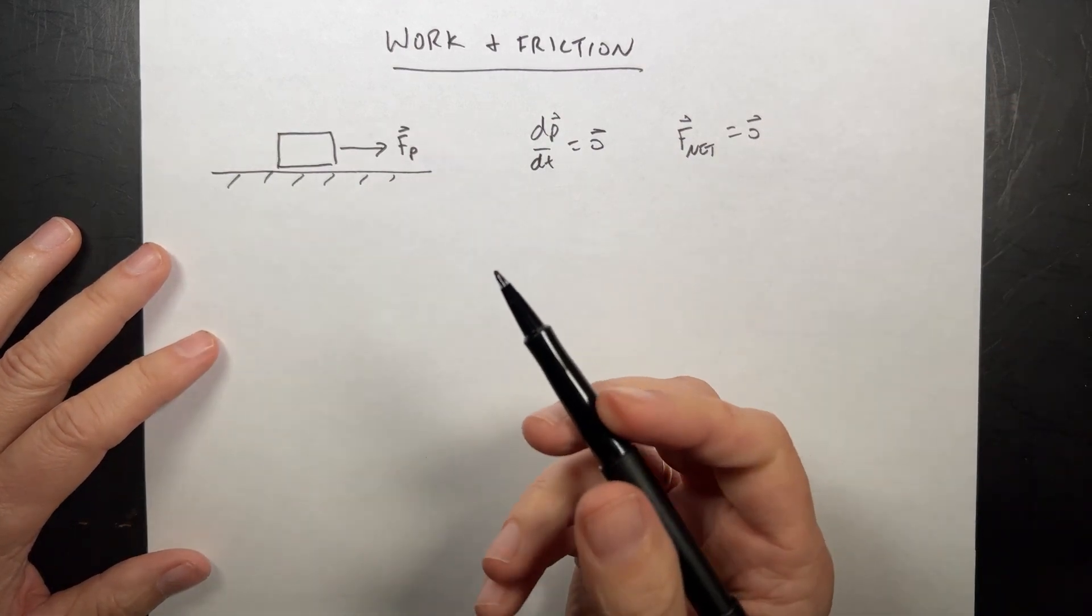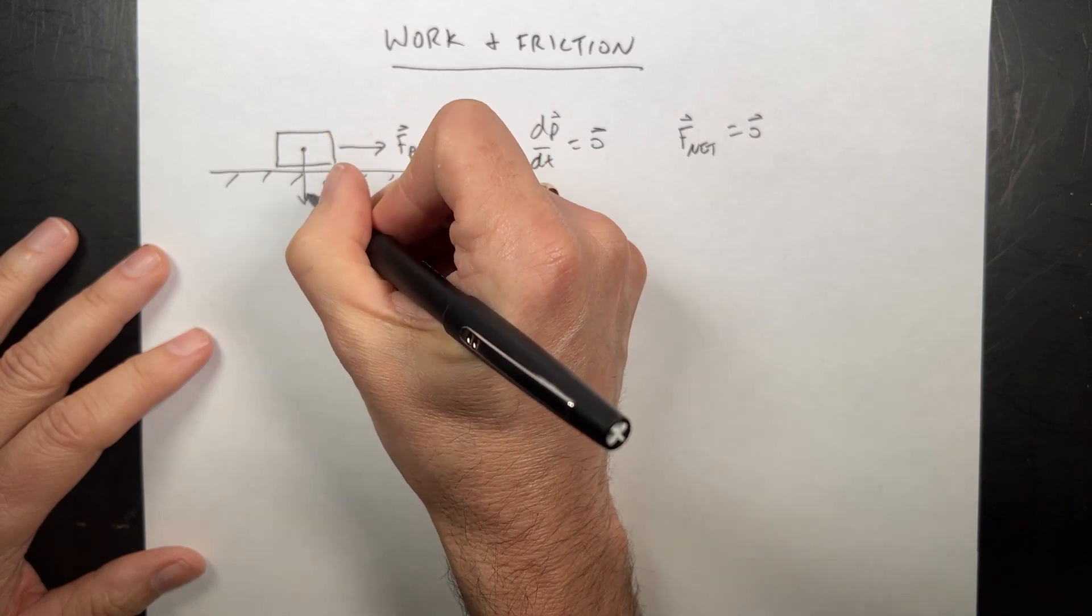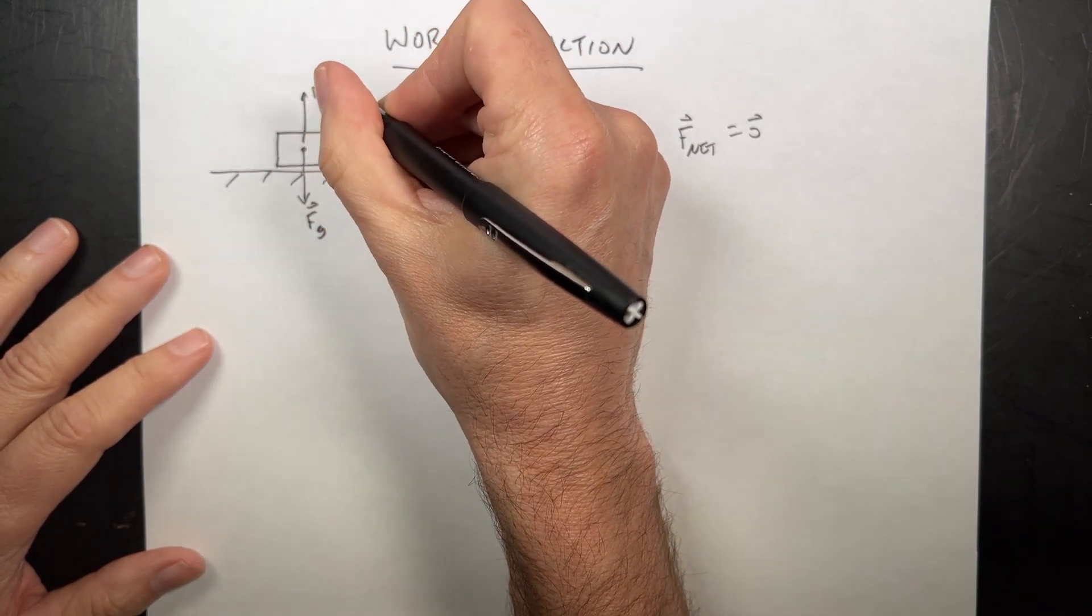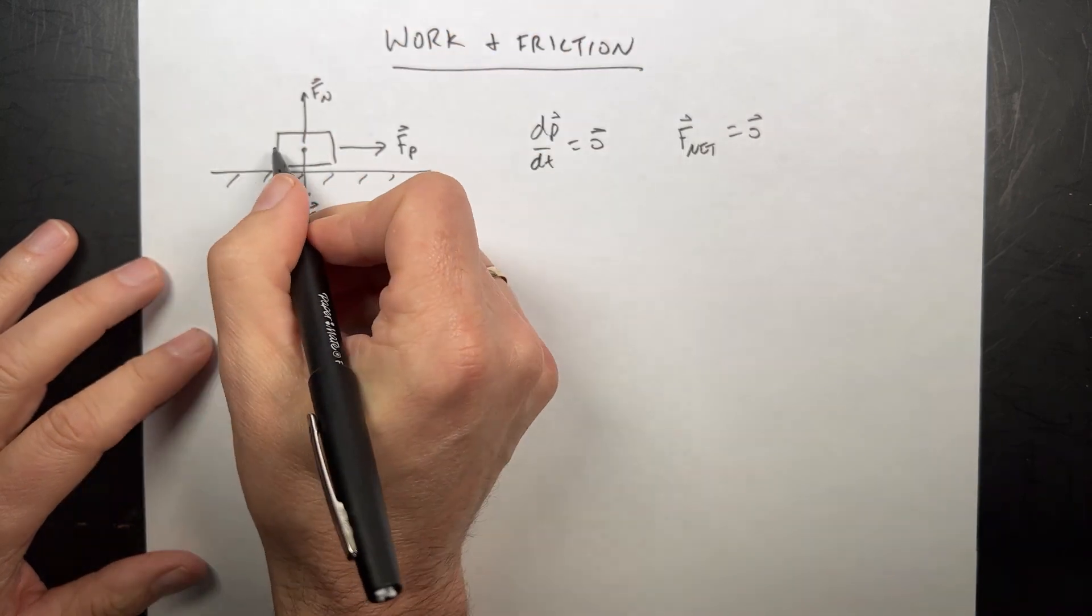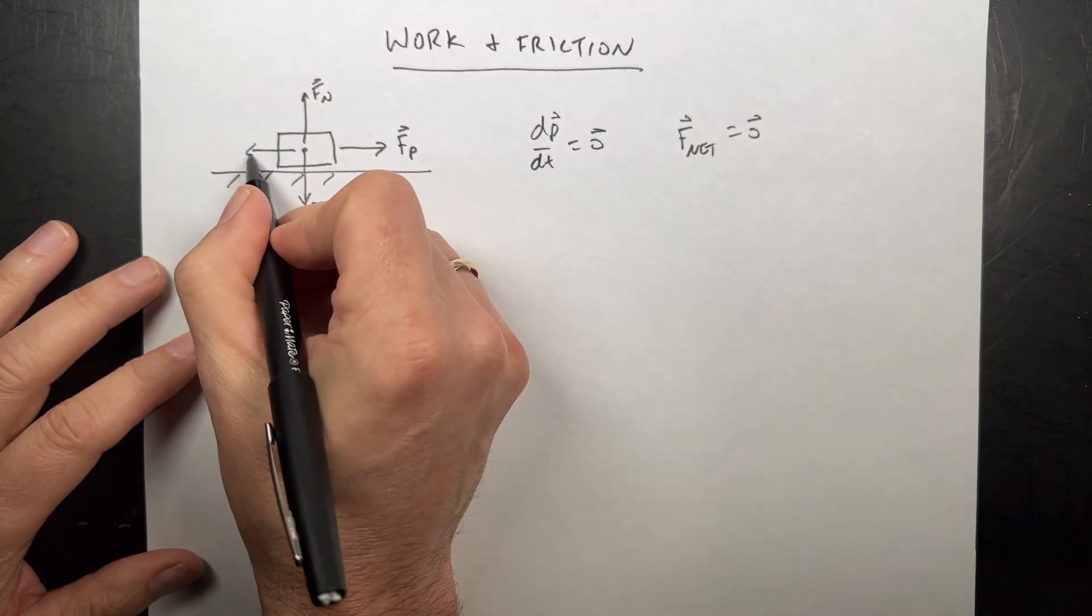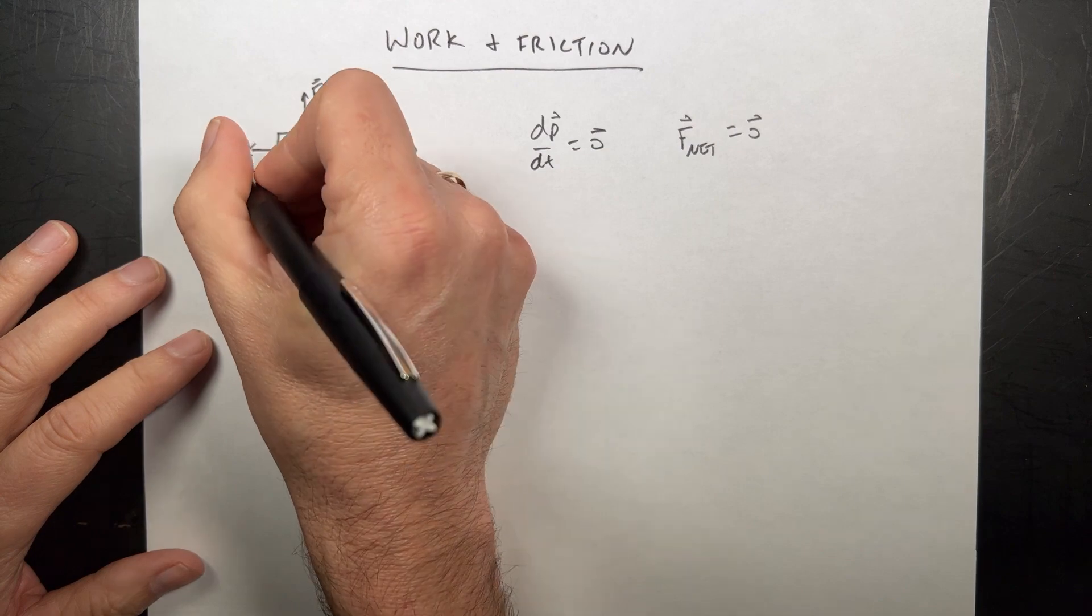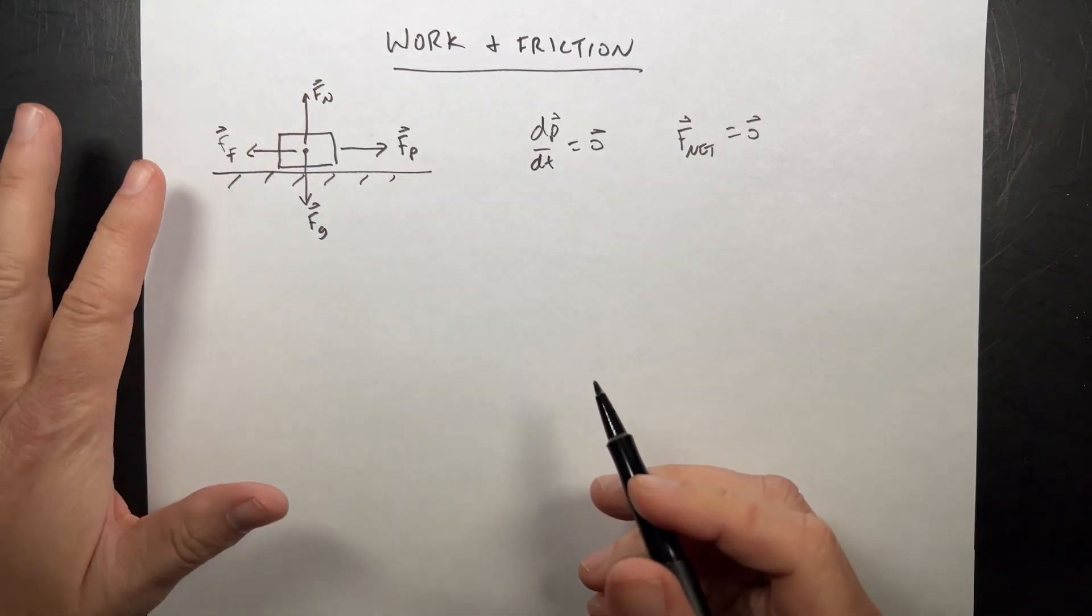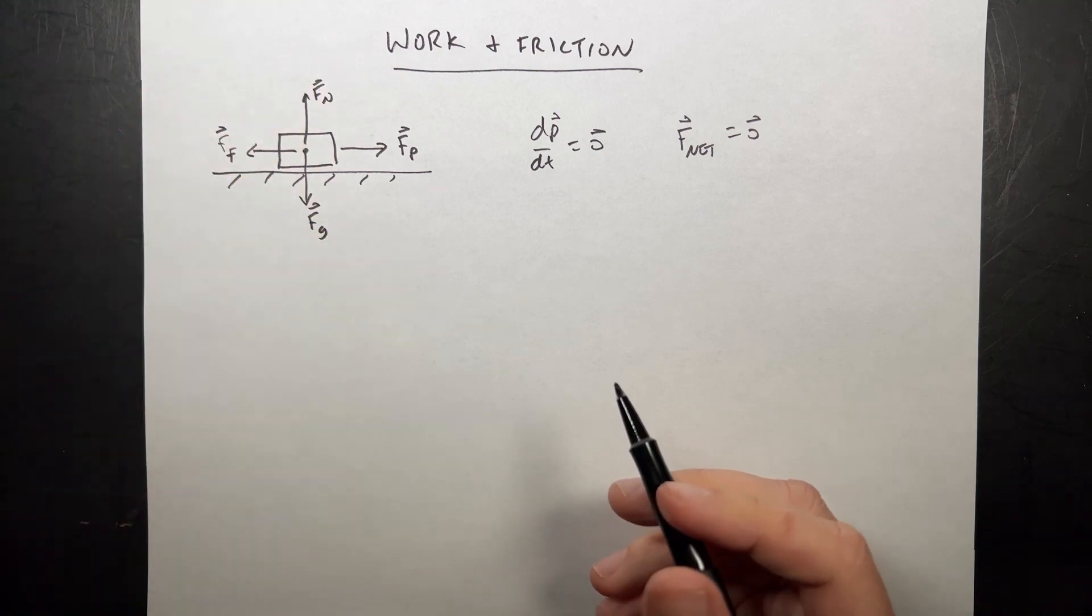So there's other forces acting on it. There obviously are. I have the downward gravitational force Fg. Don't really care about that. I have the upward normal force from the table Fn, and then I have the backwards pushing frictional force Ff. Now if I'm not pushing it then these two forces have to be equal.